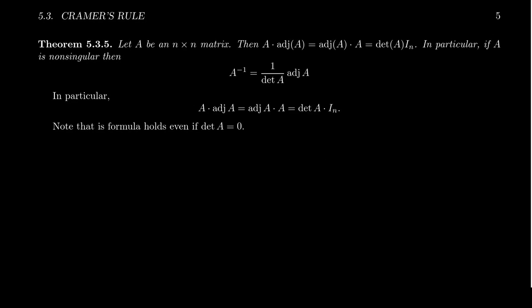So as an application of Cramer's rule, we can actually compute a formula for the inverse of a matrix. So if A is an n-by-n matrix, then the adjugate has the property that A times the adjugate, actually the adjugate commutes with the matrix, and this will equal the determinant times the identity. And so in particular, if the determinant is non-zero, it's a non-singular matrix, then you can divide by the determinant. And this gives you a formula for the inverse. The inverse of A will be 1 over the determinant times the adjugate of A.